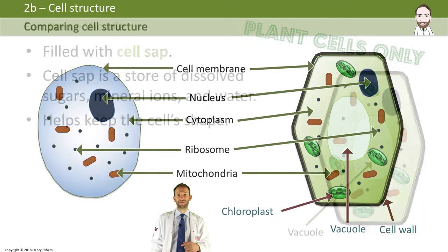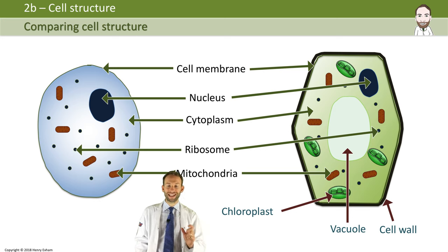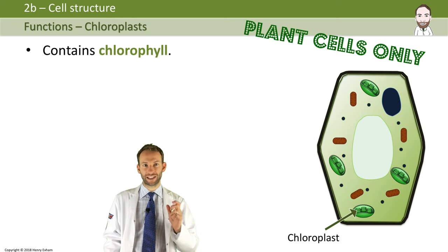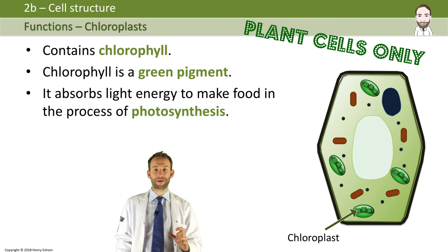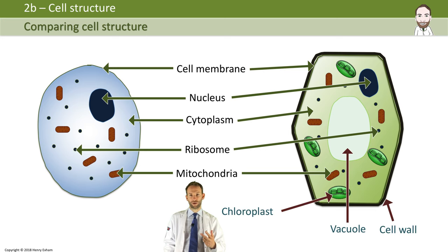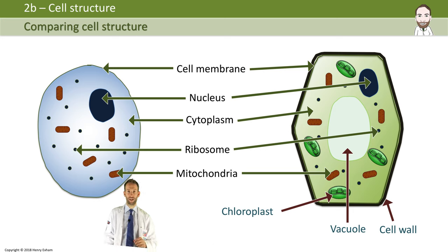You've got the cytoplasm, you've got ribosomes again for protein synthesis, you've got mitochondria again for respiration, but you've also got these green organelles called chloroplasts, which are full of chlorophyll — that is where photosynthesis takes place. So if you're comparing animal and plant cells, you can see the two diagrams here, and the chloroplast, the vacuole, and the cell wall are the three extra organelles that plant cells have. You would need to be able to draw those cells and recognise all those structures.